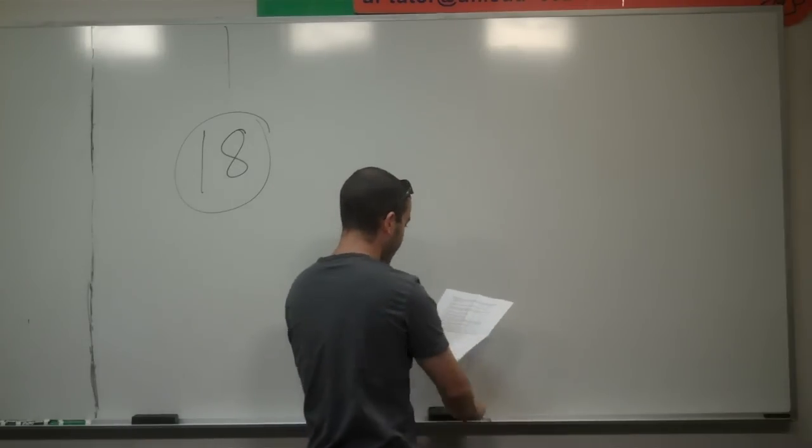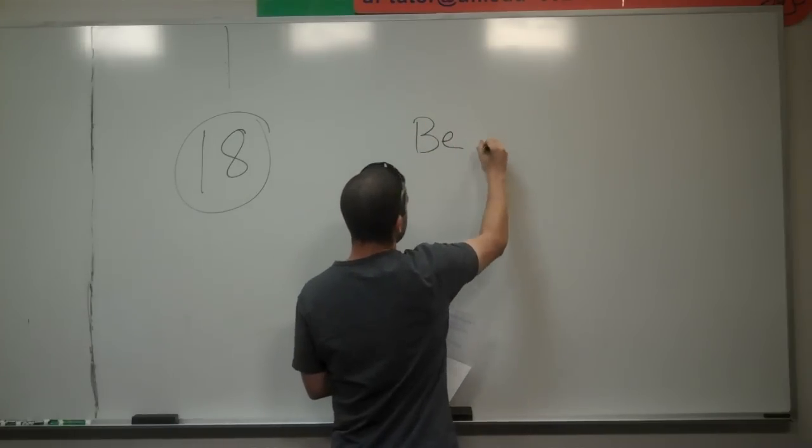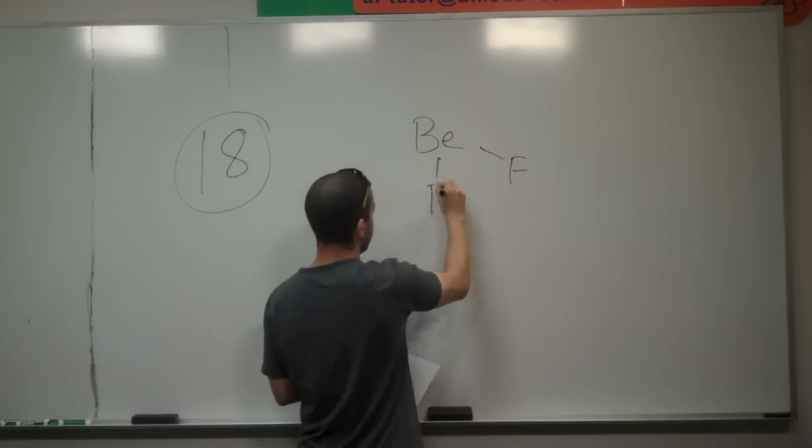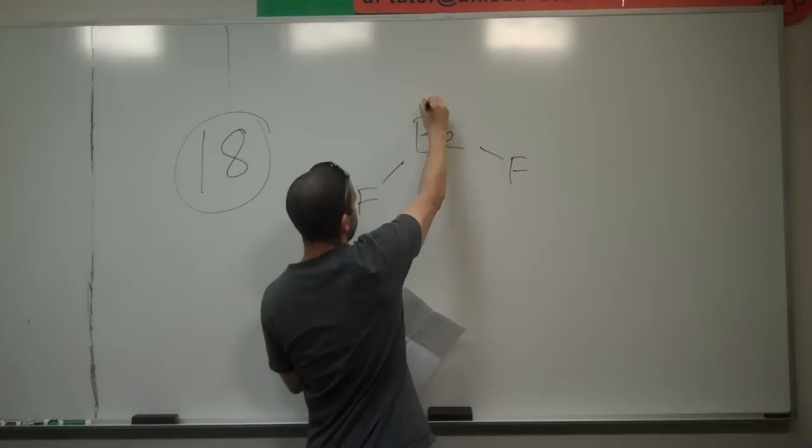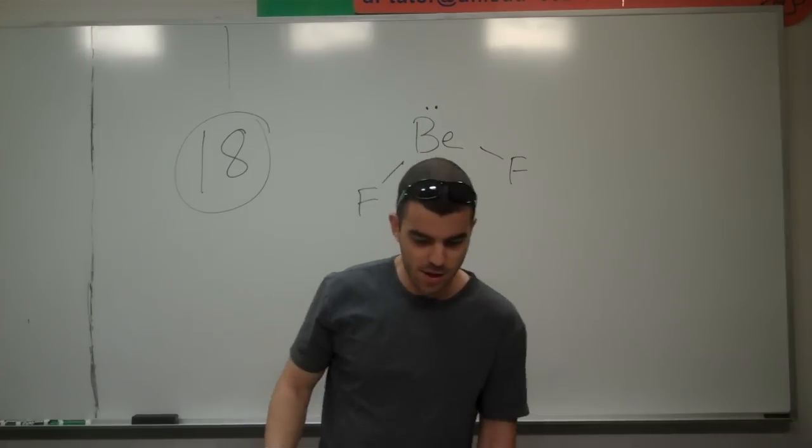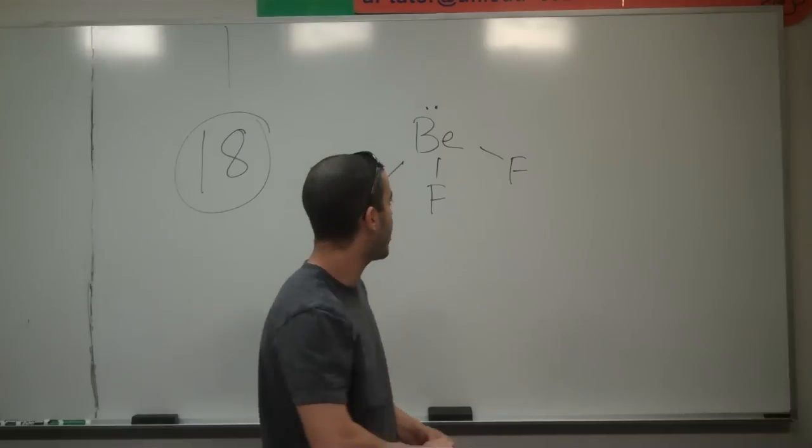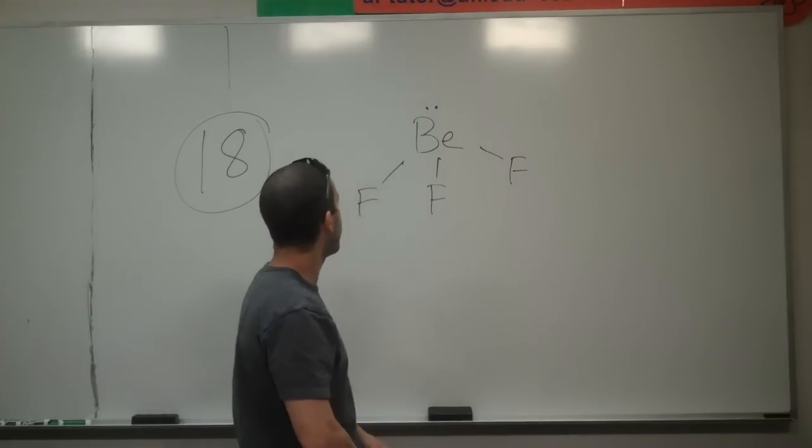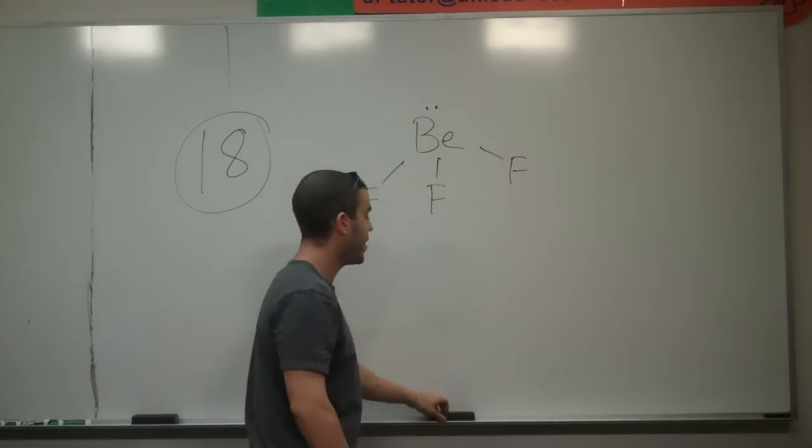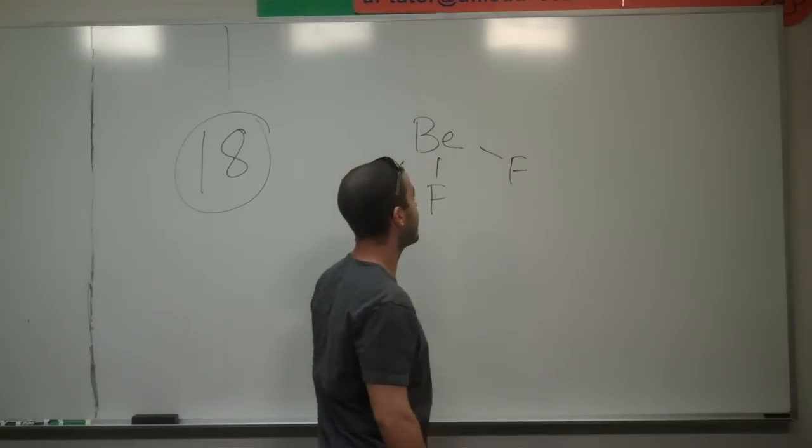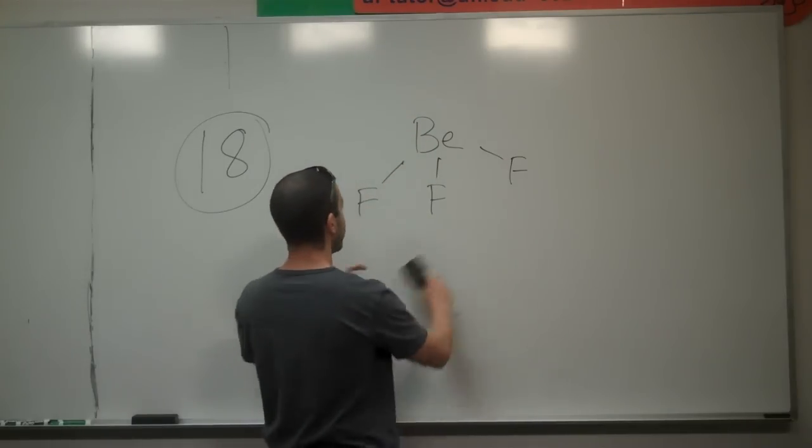Let's go through. We've got BEF3. BE would be singly bound to a bunch of Fs. But if we put this lone pair on it like that, the problem is that because BE is element number 4, this one doesn't work. It would require it to have P orbitals, which it does not, so we couldn't produce this anyway. The best we could possibly do is this, which is actually trigonal planar, so that one's not right.